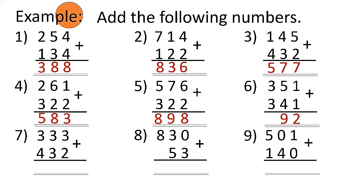Number 7: 333 plus 434 — 3 plus 4 is 7, 3 plus 3 is 6, 3 plus 4 is 7. So the answer is 767.